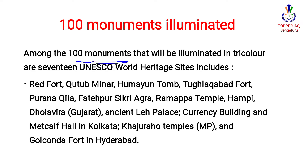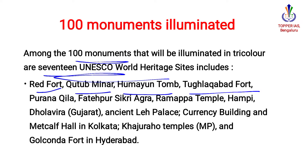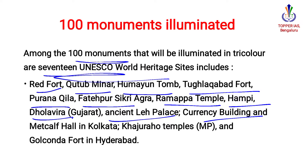These 100 monuments include 17 UNESCO World Heritage sites, namely Red Fort, Qutub Minar, Humayun's Tomb, Tughlaqabad Fort, Purana Qila, Fatehpur Sikri, Ramappa Temple, Hampi, Dholavira, Ancient sites, Palace and Currency Building, Metcalfe Hall, Khajuraho Temple, and Golconda Fort.